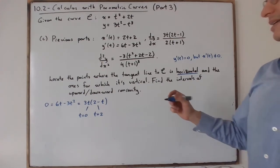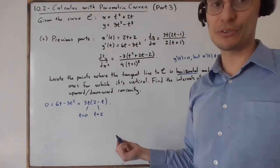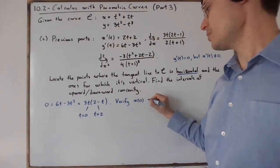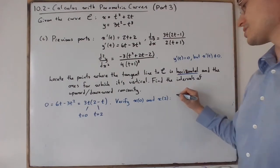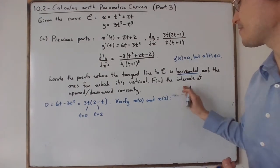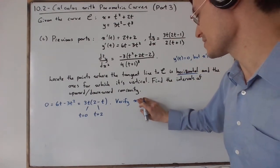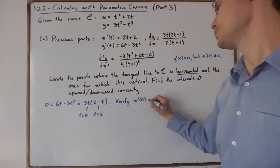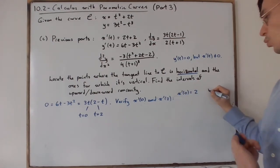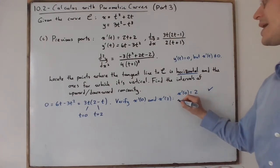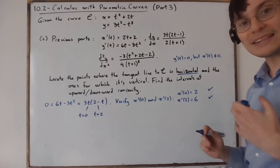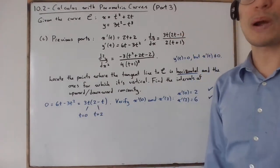Now verify that x'(0) and x'(2) are not equal to 0. x'(0) is 2 — we're good, it's not 0. x'(2) is 4 plus 2, which is 6 — we're good, it's not 0. So we know that the tangent line is horizontal when t equals 0 or when t equals 2.